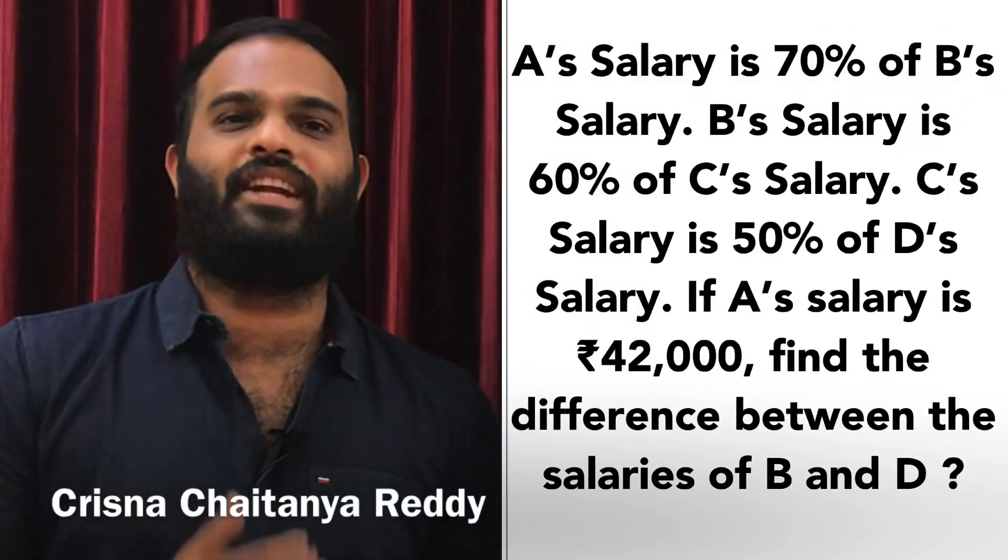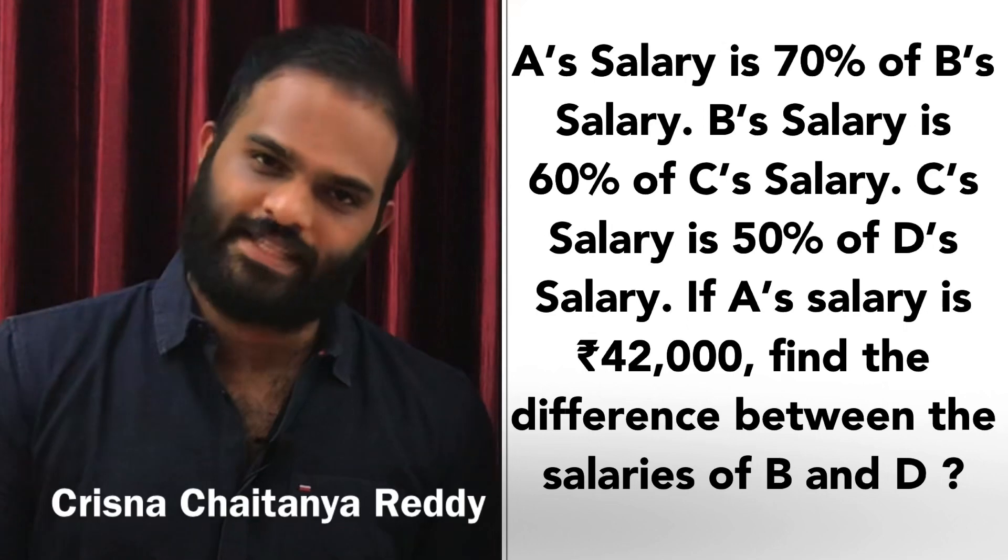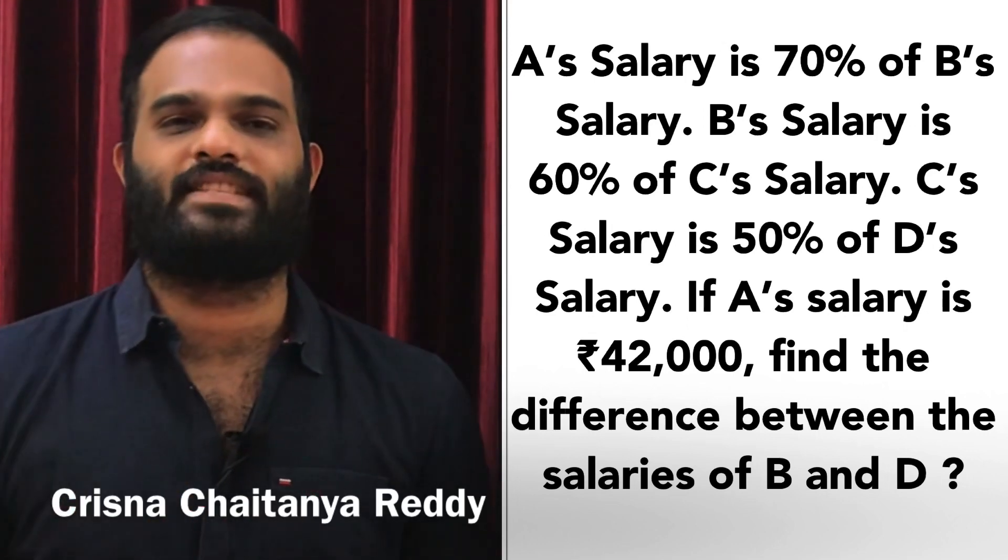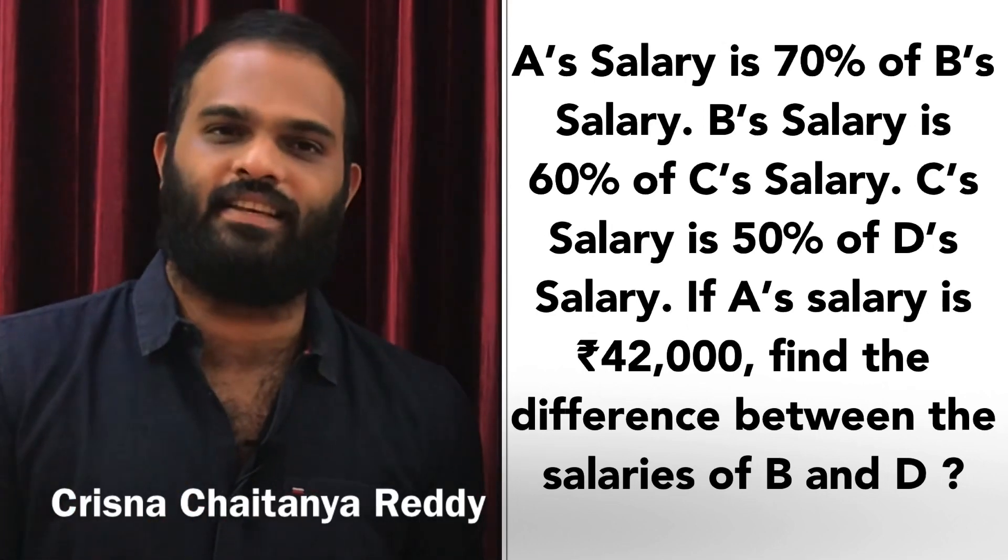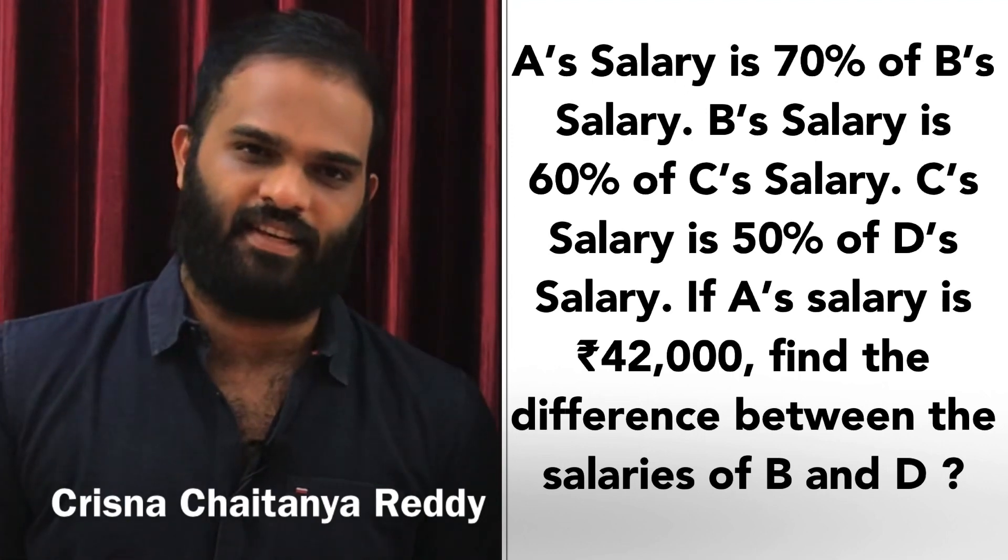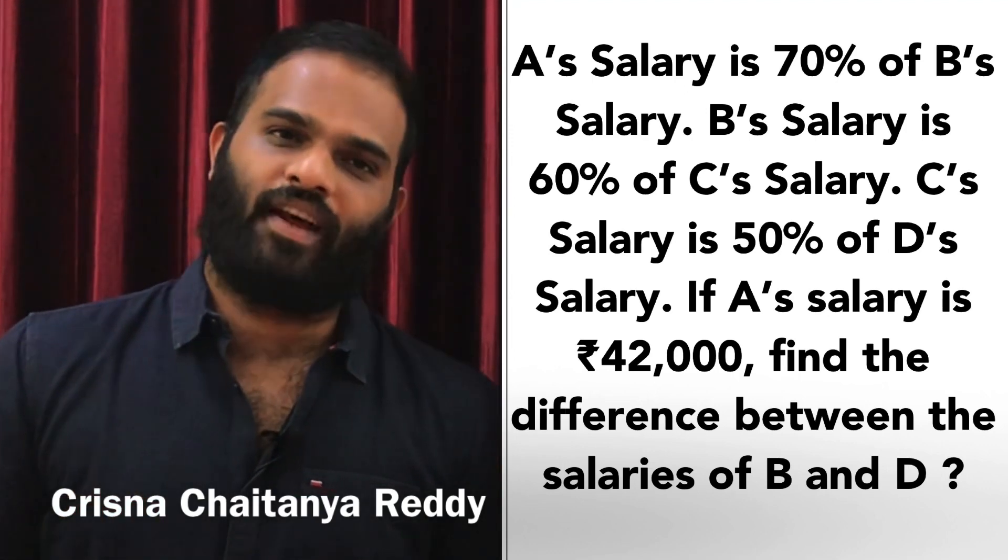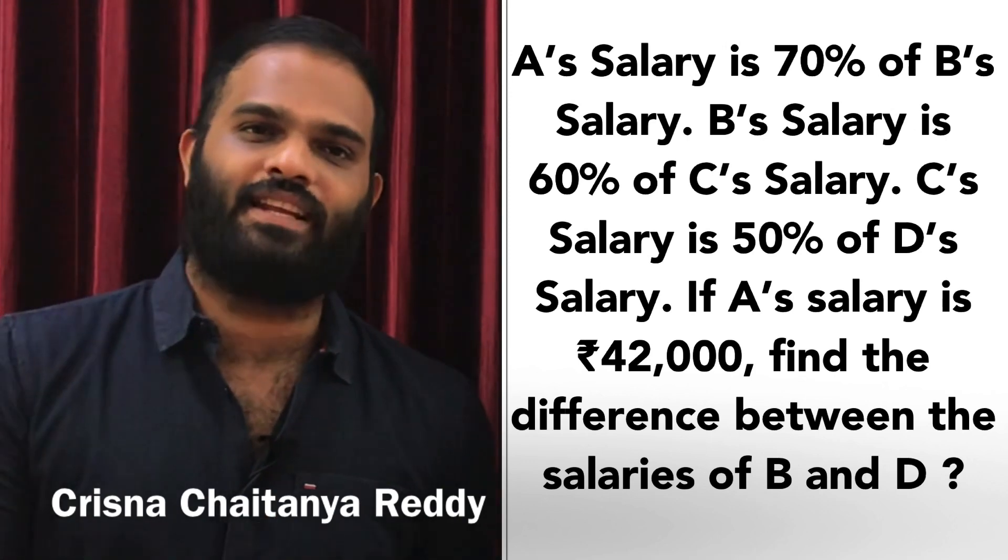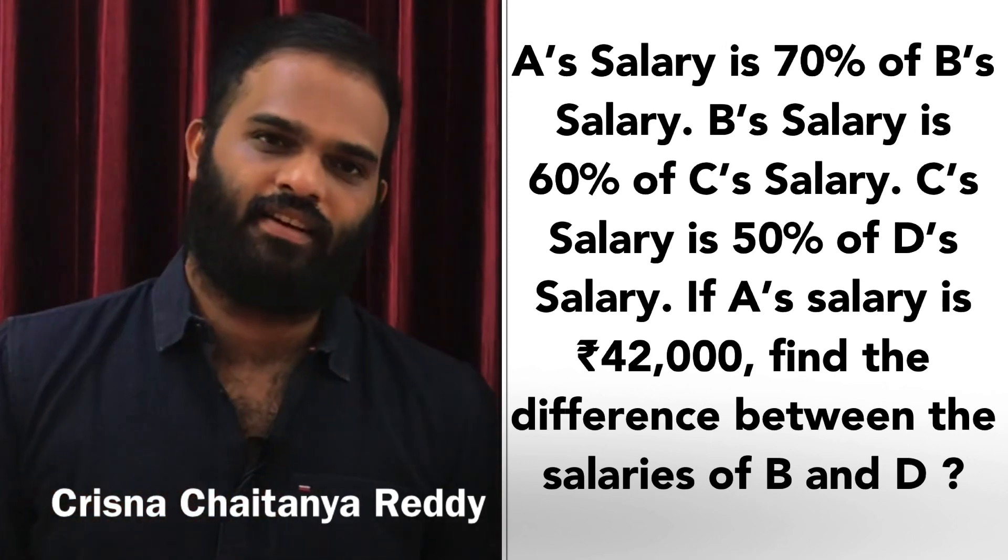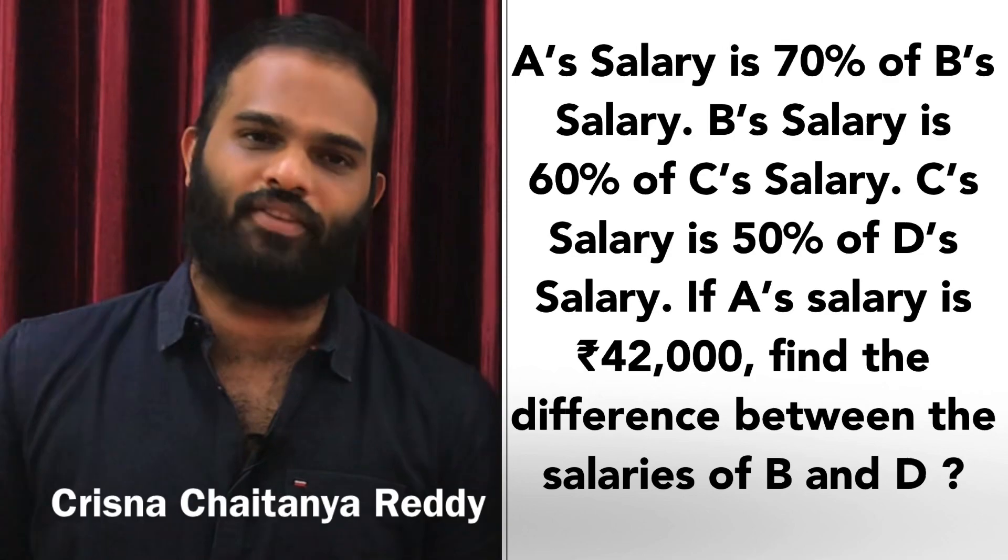A's salary is 70% of B's salary, B's salary is 60% of C's salary, and C's salary is 50% of D's salary. If A's salary is 42,000 rupees, find the difference between the salaries of B and D. If this is the question, how do we solve it?